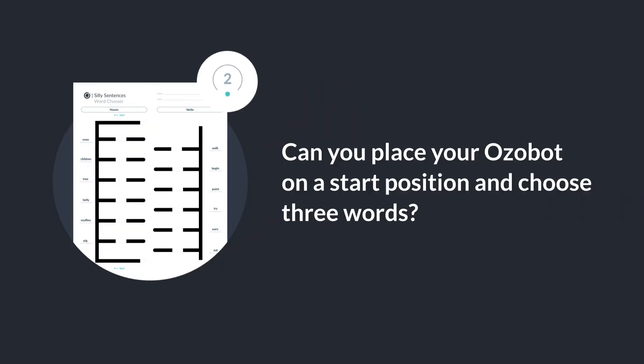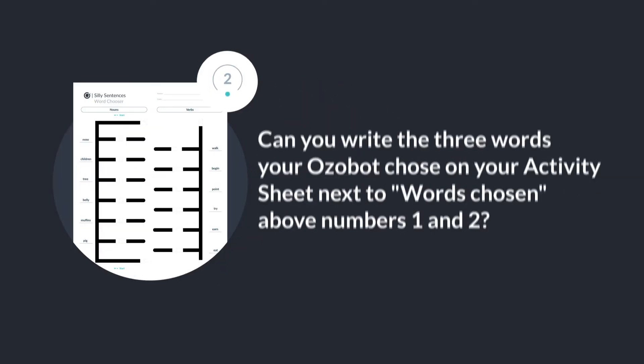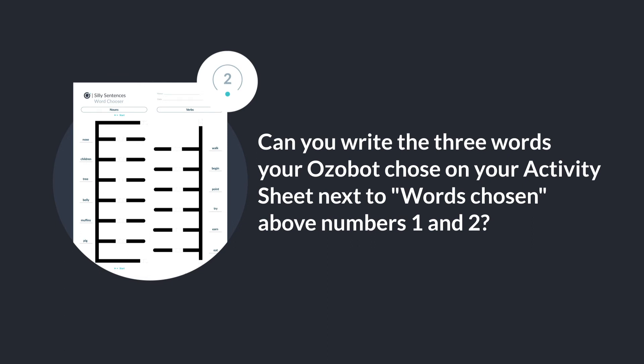Can you place your Ozobot on a start position and choose three words? Can you write the three words your Ozobot chose on the activity sheet next to words chosen above one and two?